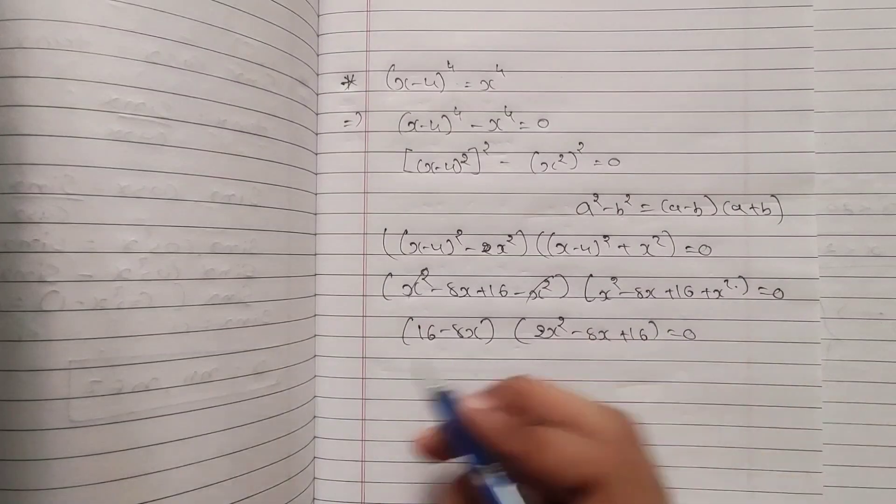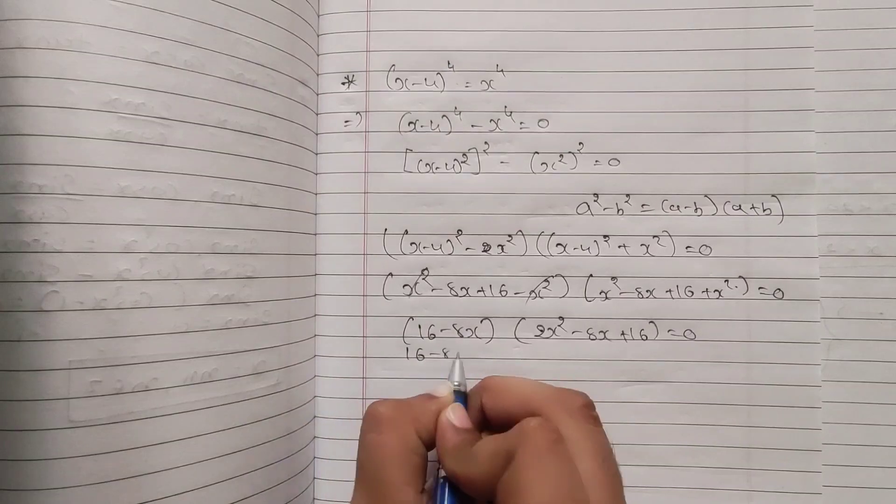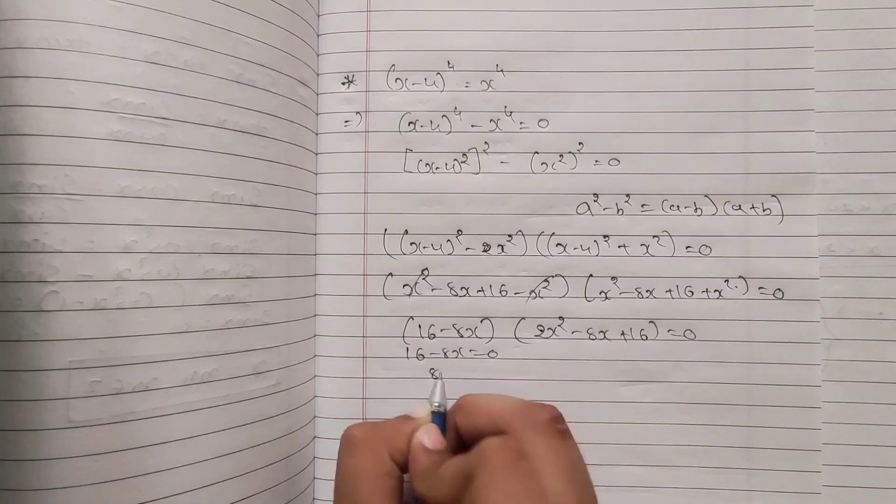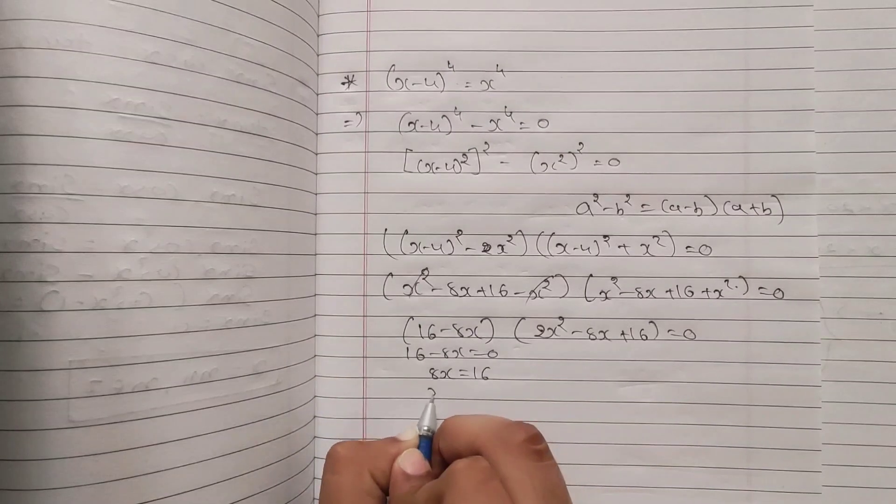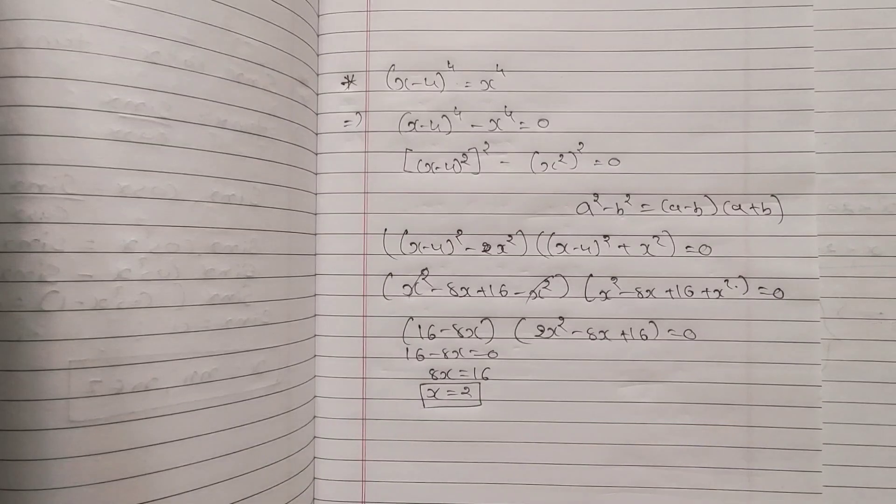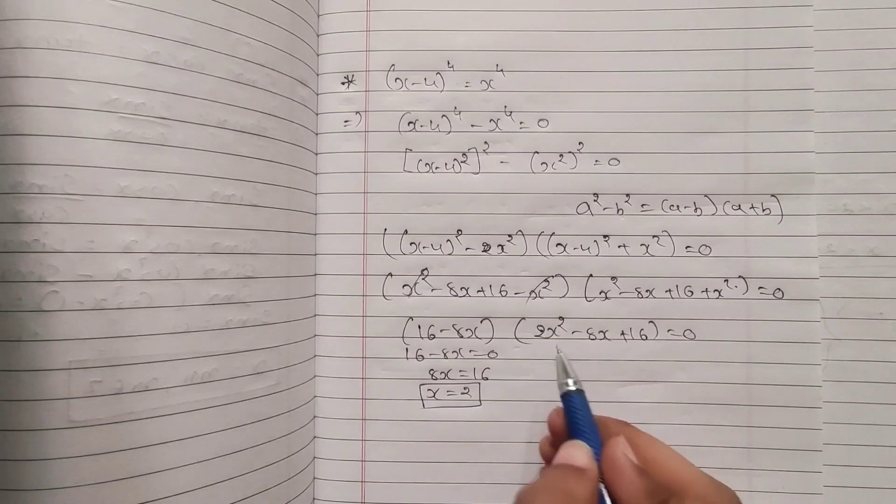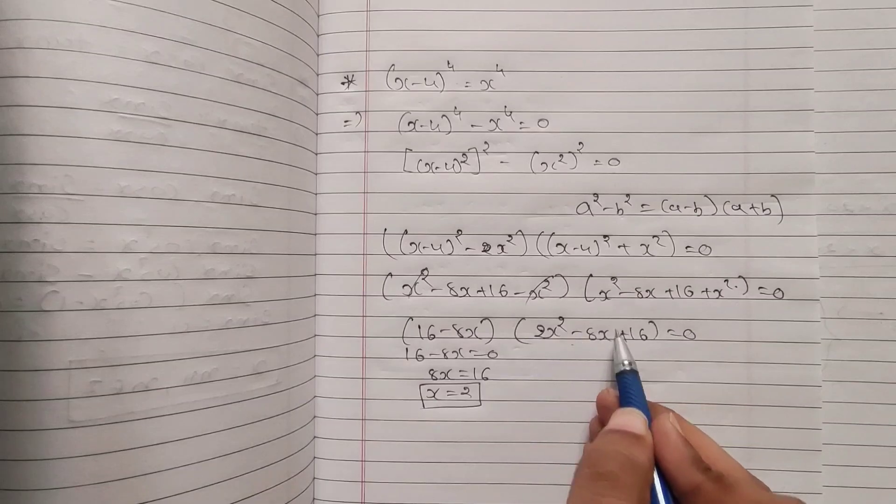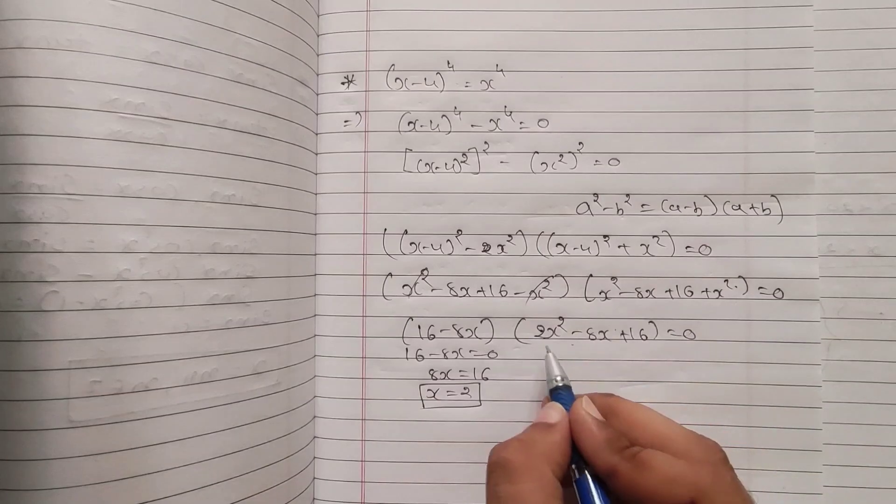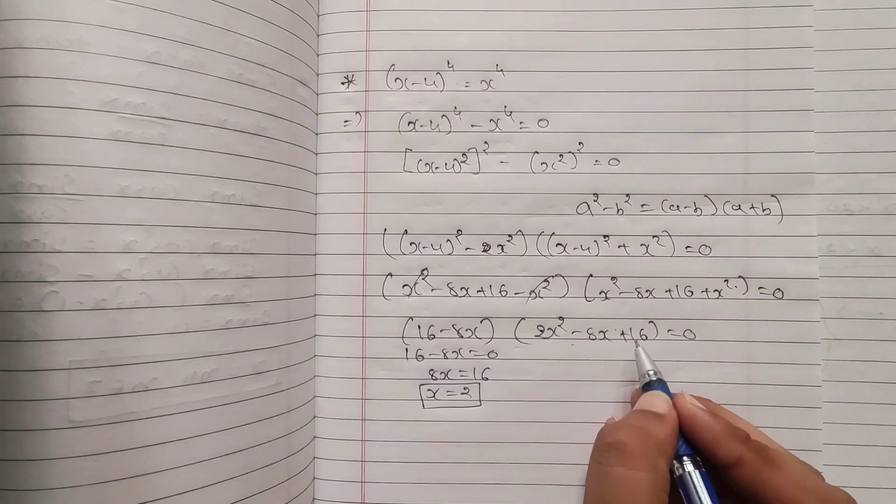So now both of these parts equal 0. First, 16 - 8x = 0, which means 8x = 16 and x = 2 is our first answer. Now we will solve this equation. Here I have 2x² - 8x + 16. From this equation, if I bring 2 common...